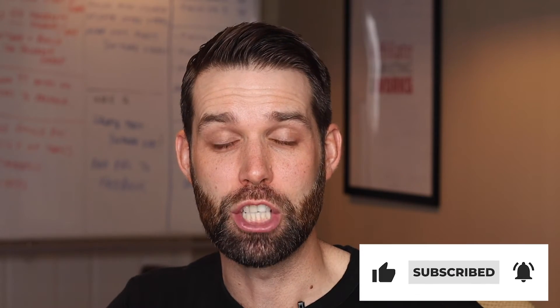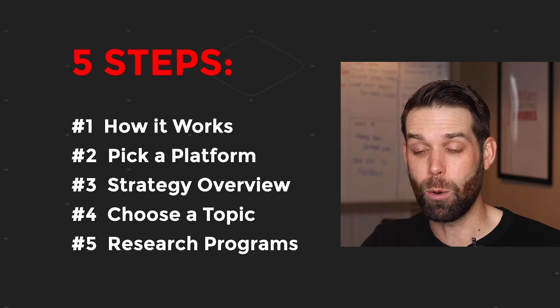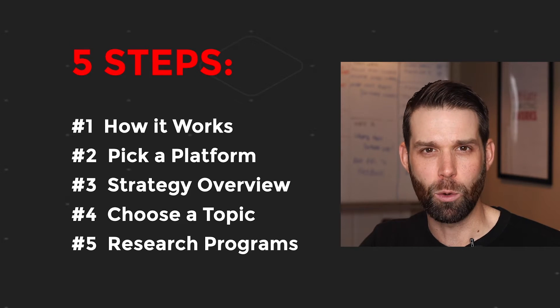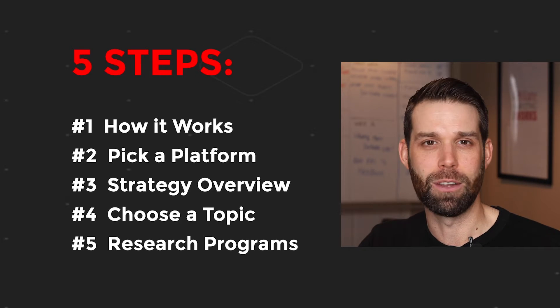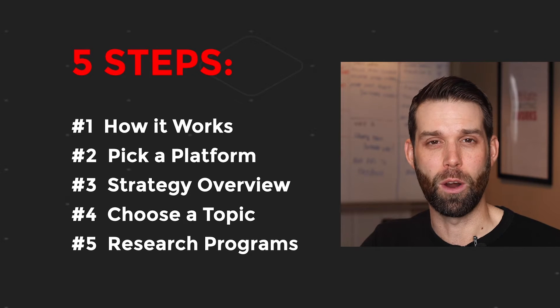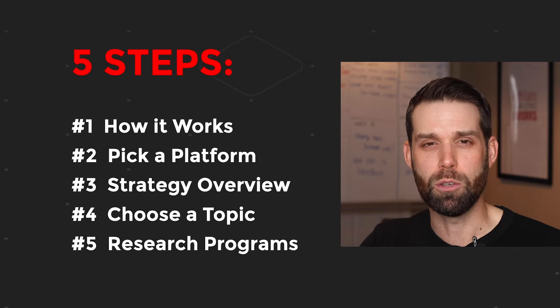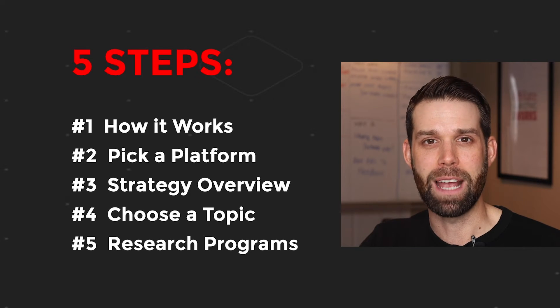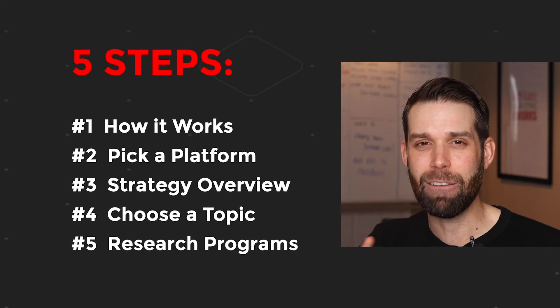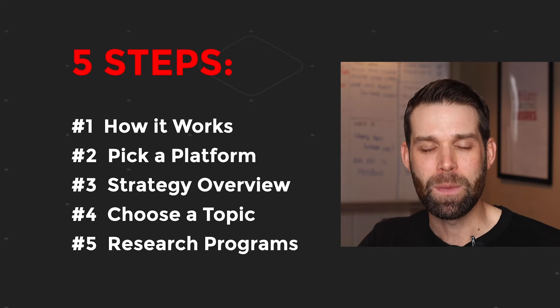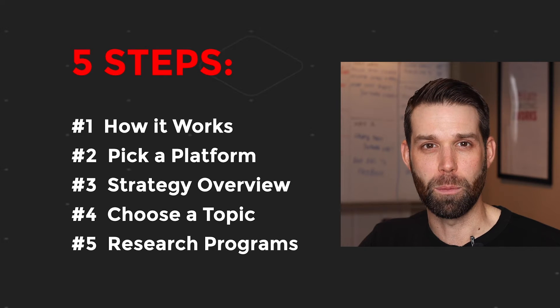So those are the five steps to getting started with affiliate marketing. A quick review: step one was all about understanding how affiliate marketing works — you're the middleman between a potential customer and an online store. Step two was about picking your platform. There are several ways to be successful: you can build a website, do affiliate marketing through YouTube videos, or through social media. I recommend that beginners start by building a website — every business has a website as its foundation, and it's the best avenue for beginners in my opinion.